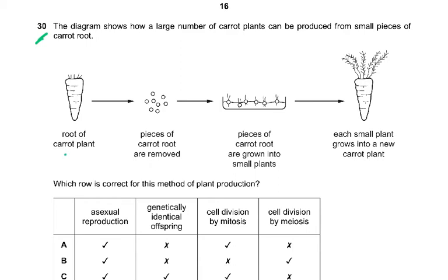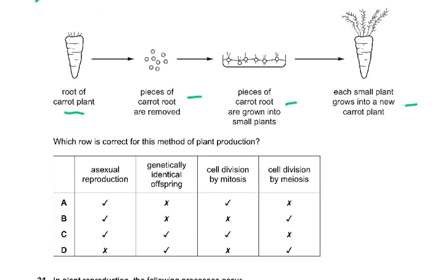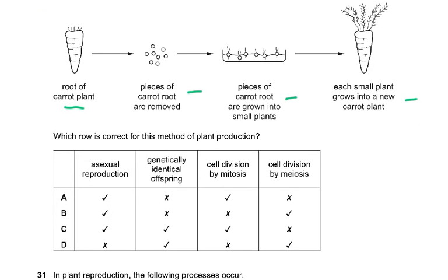Question 30: The diagram shows how a large number of carrot plants can reproduce from a small piece of carrot root. The answer is C because it is asexual reproduction; the plants are genetically identical; and cell division is by mitosis — there is no meiosis. Since we've just taken a piece of the carrot and grown it, it will be exactly genetically identical — a clone.